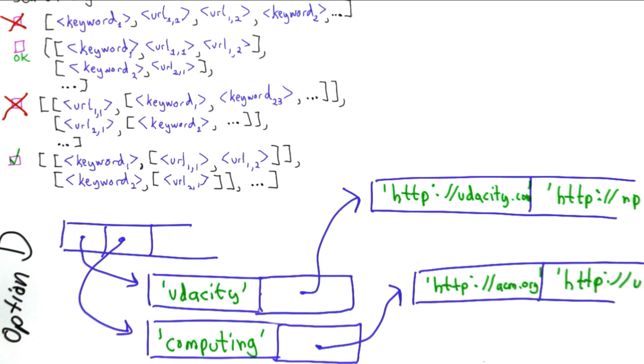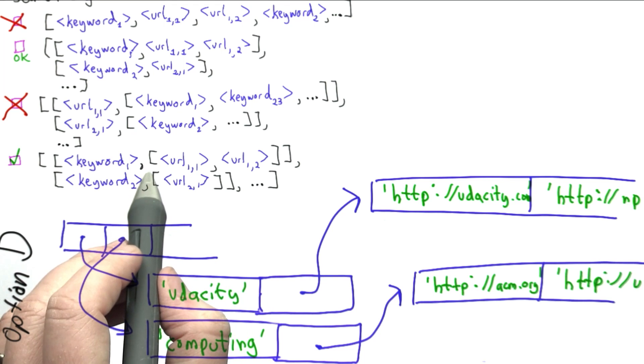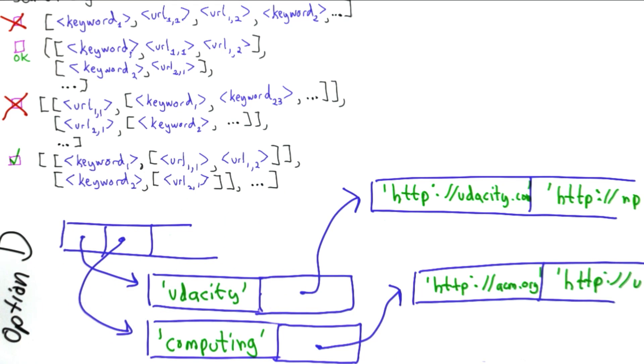So this is option D. Each element of the main list is a list, and it's a list that just contains two elements. It contains the keyword, here the keyword Udacity, followed by a list containing all the URLs where that keyword appears. The reason I like this better than the second option is that it really makes a clear separation between the keyword and the list of URLs.